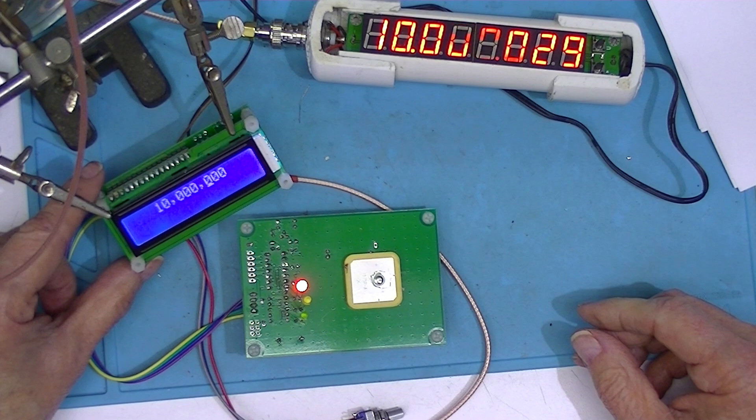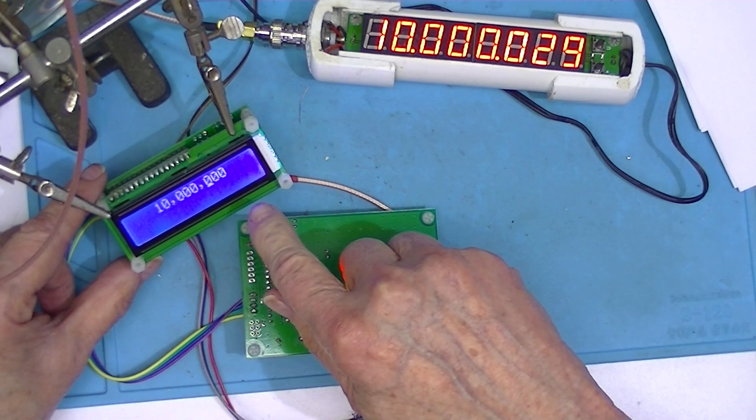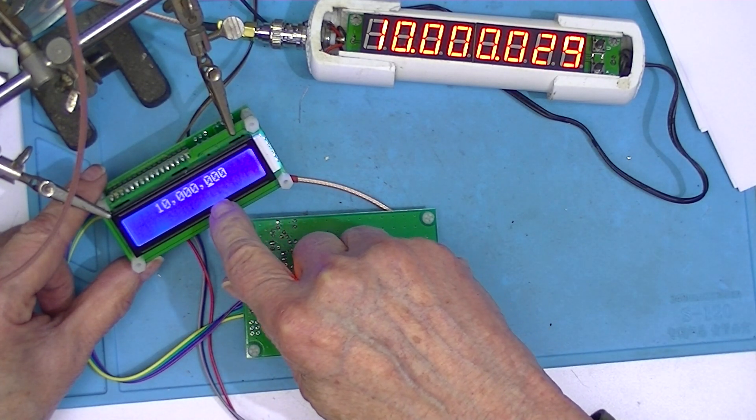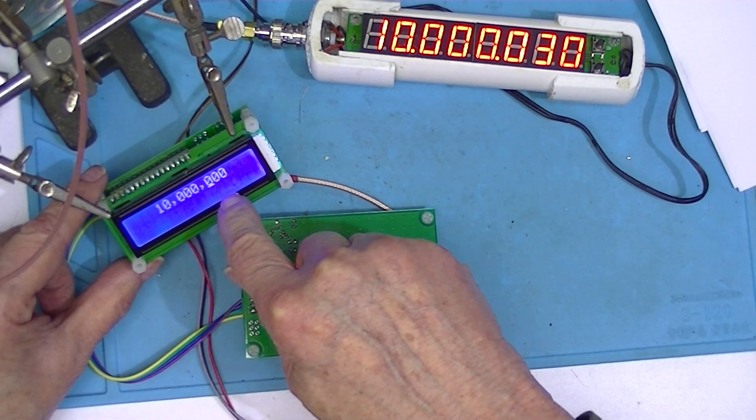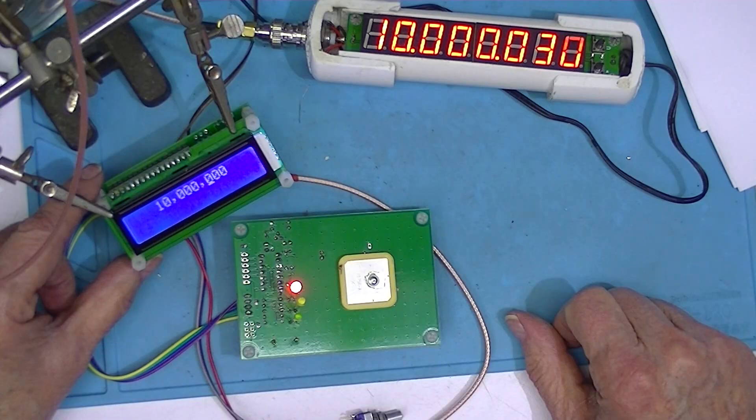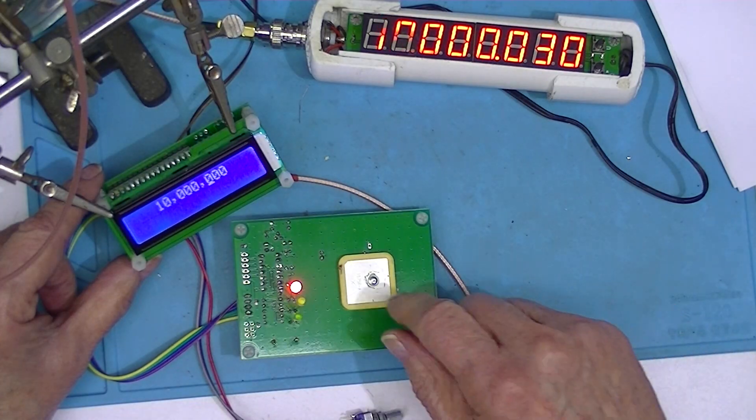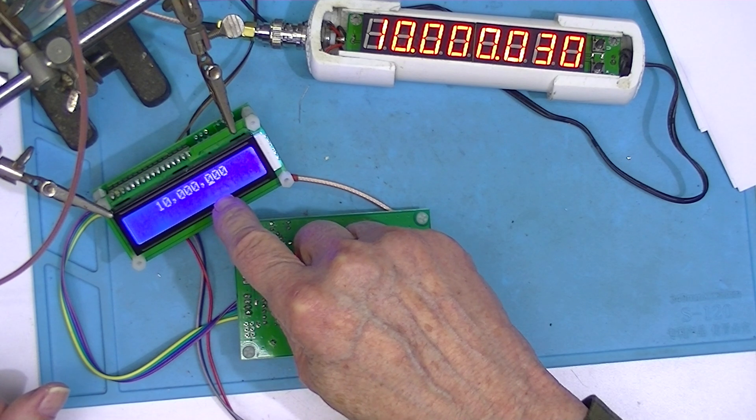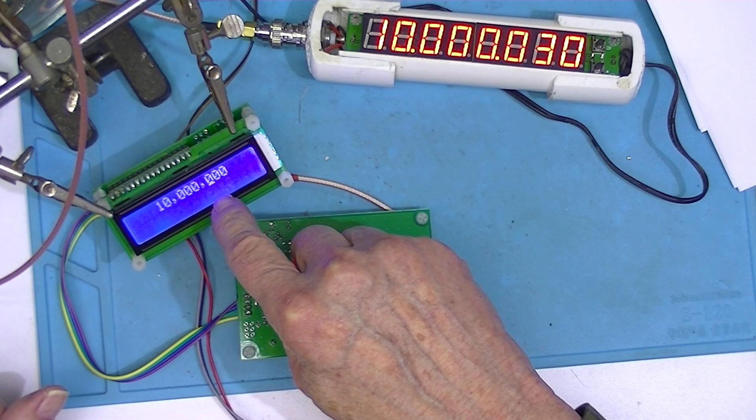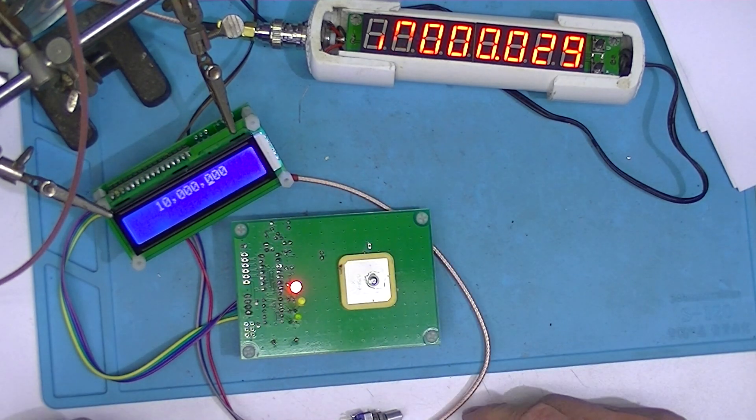So now I believe this little QRP Labs signal source has less than 1 hertz error. So this is practically a TCXO, except I can vary the frequency.